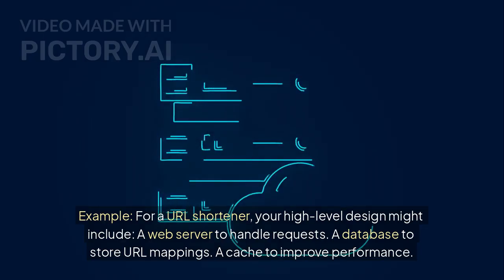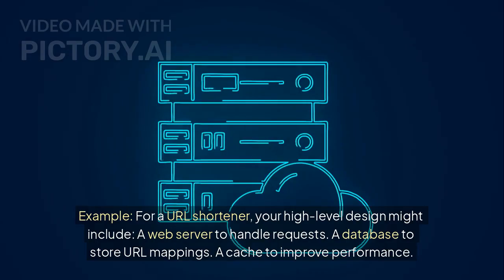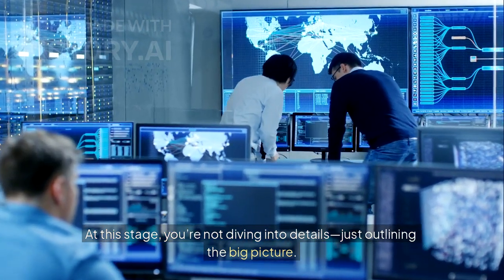For example, for a URL shortener, your high-level design might include a web server to handle requests, a database to store URL mappings, and a cache to improve performance. At this stage, you're not diving into details, just outlining the big picture.